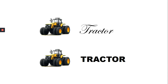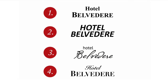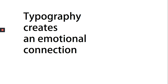Similarly, if we switch pictures, the first tractor looks a little wrong. This was an experiment I found online where participants were given a choice to select a hotel for the same money, and most of the time people would select the fourth option even though the name is the same. This is because typography creates an emotional connection.